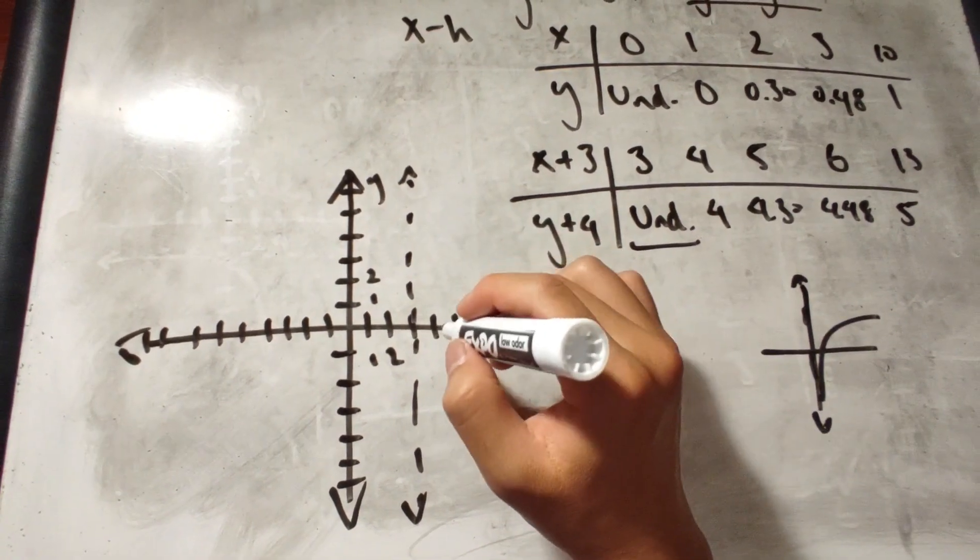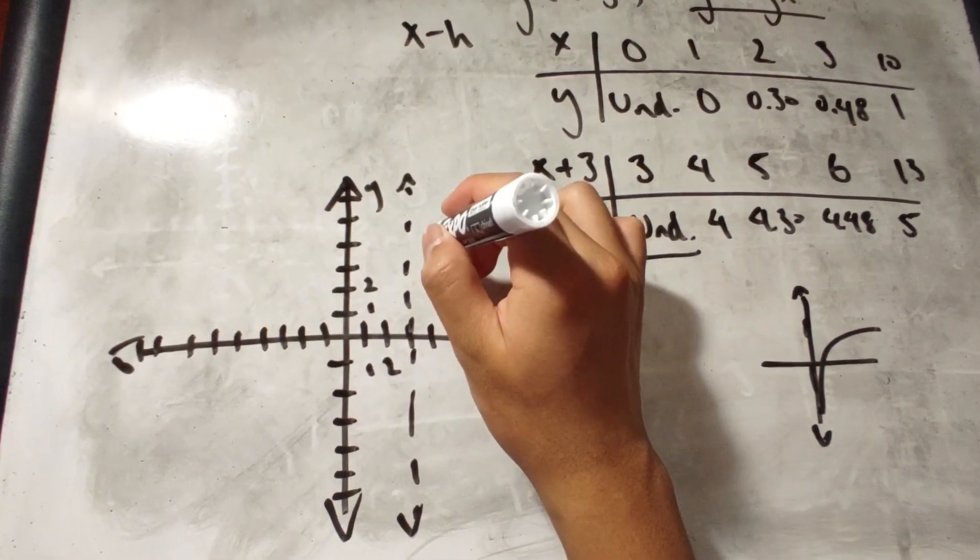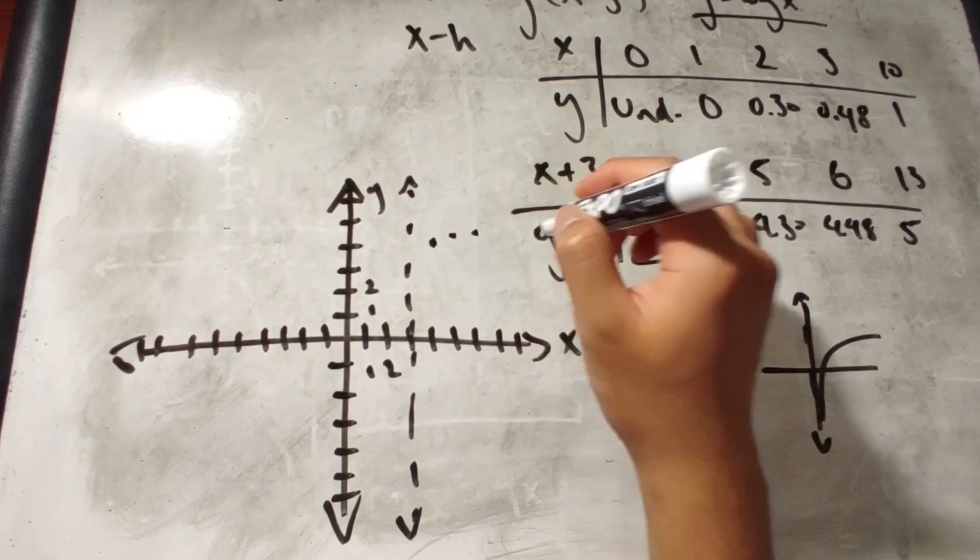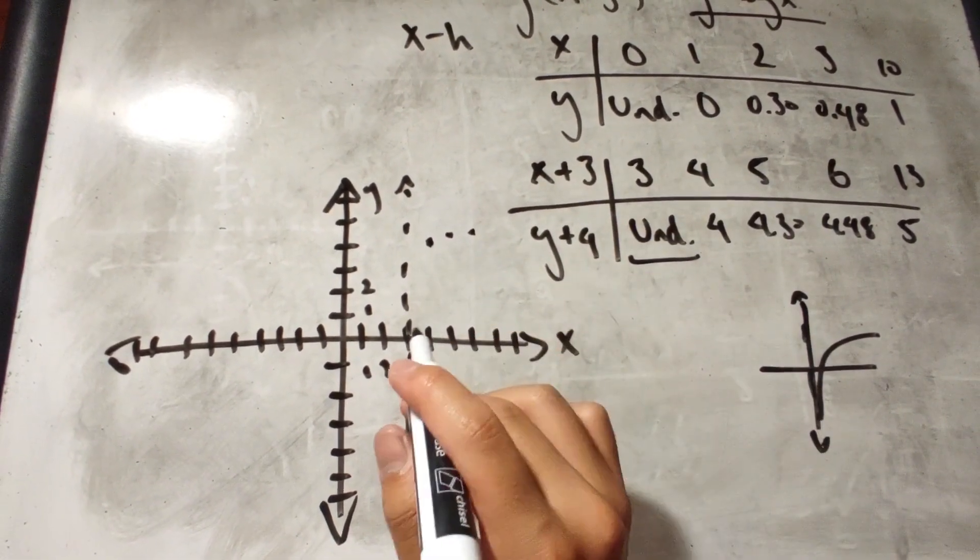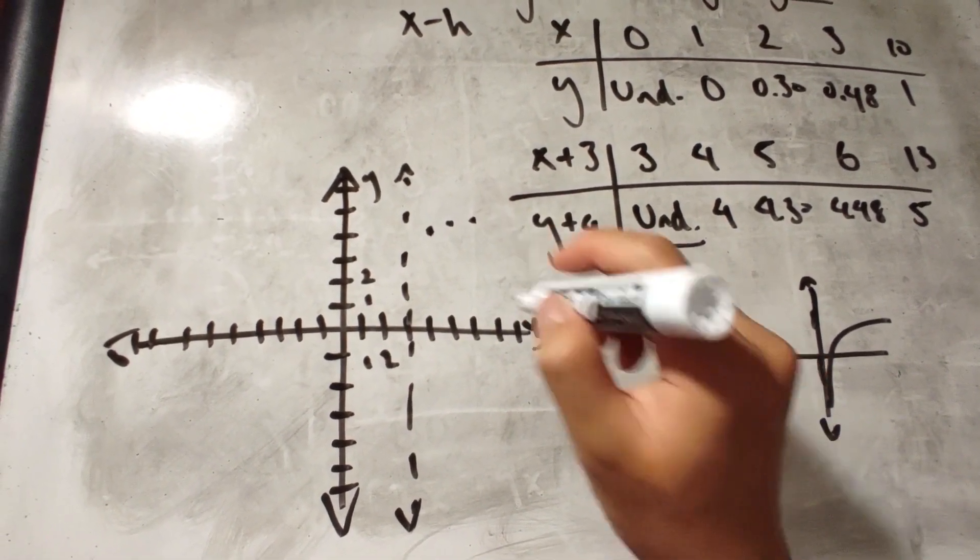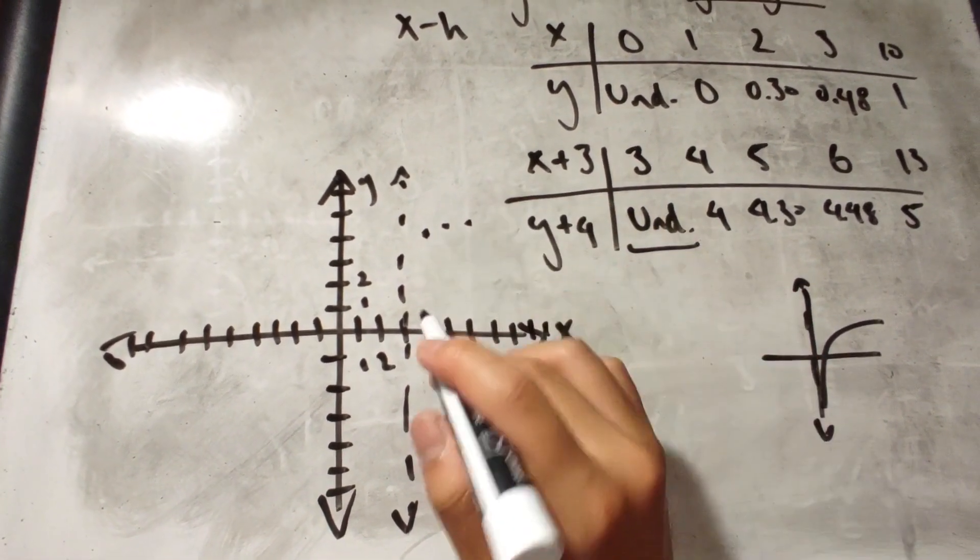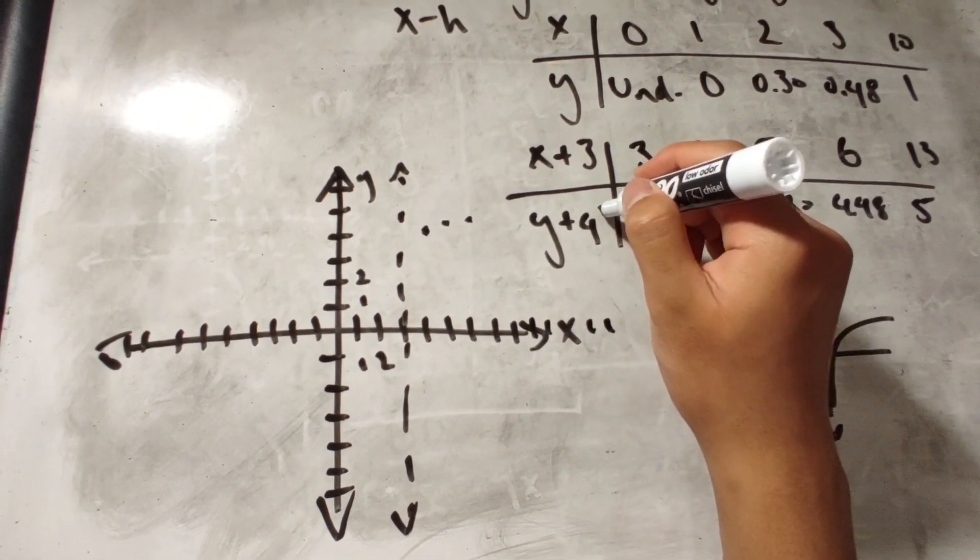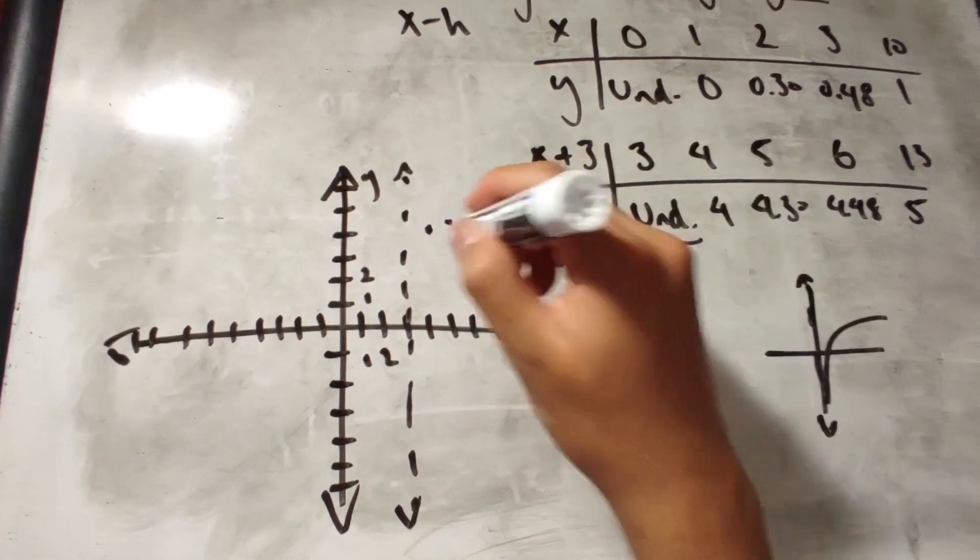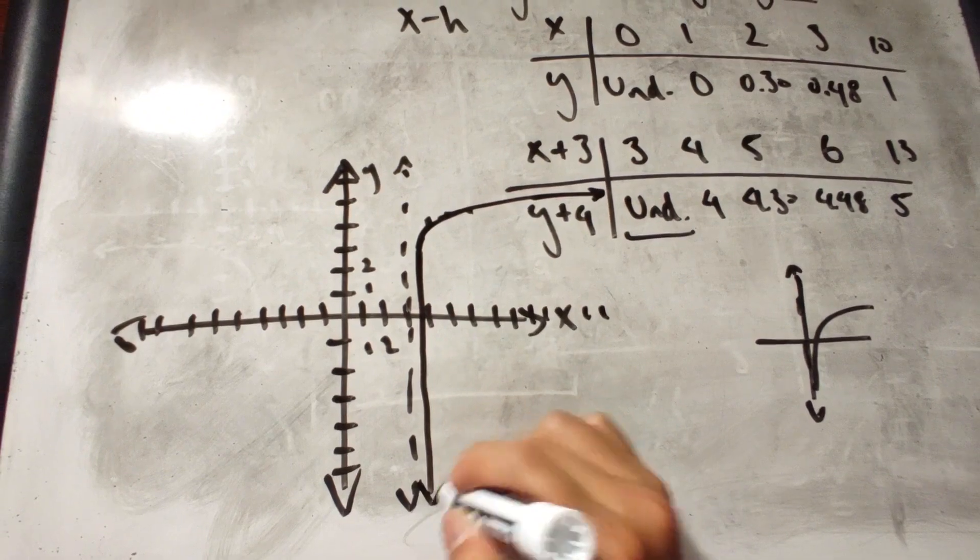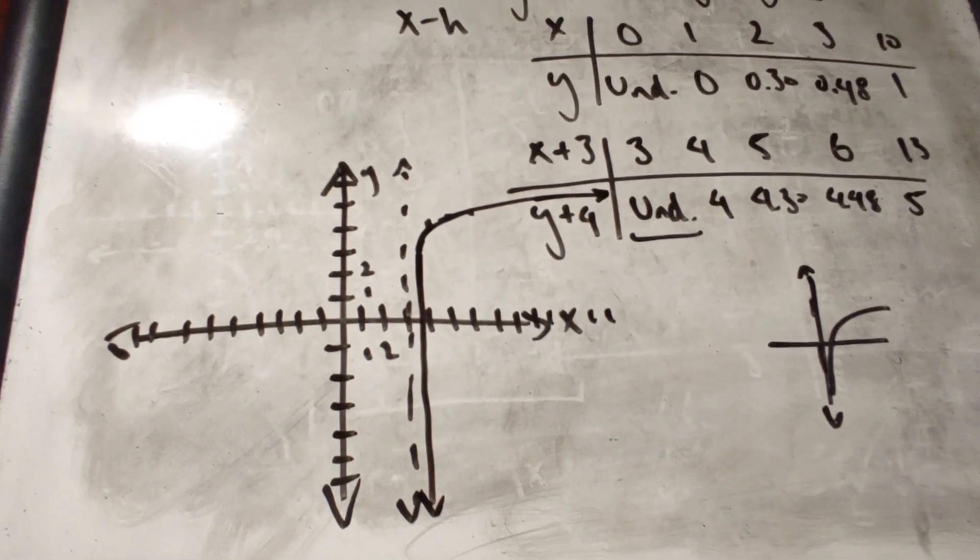So, with this, we could plug the rest of the values in. And 13 would be around here, just for the sake of showing it. And that's our graph.